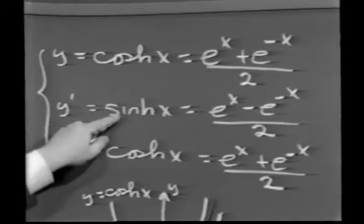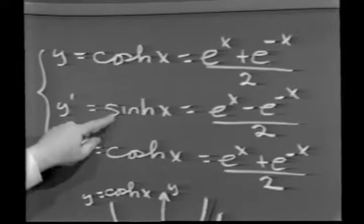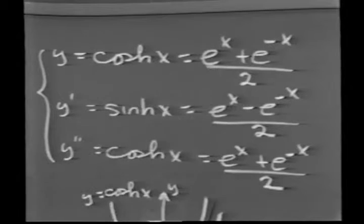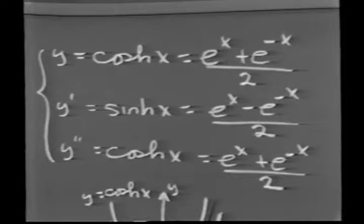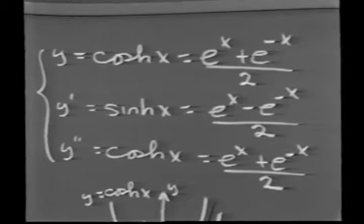The derivative of cosh is sinh. The derivative of sinh is cosh. By the way, if these terms seem alien to you, you can always rewrite them in terms of the basic definition, in terms of e to the x and e to the minus x, and carry out the differentiation in a straightforward way.